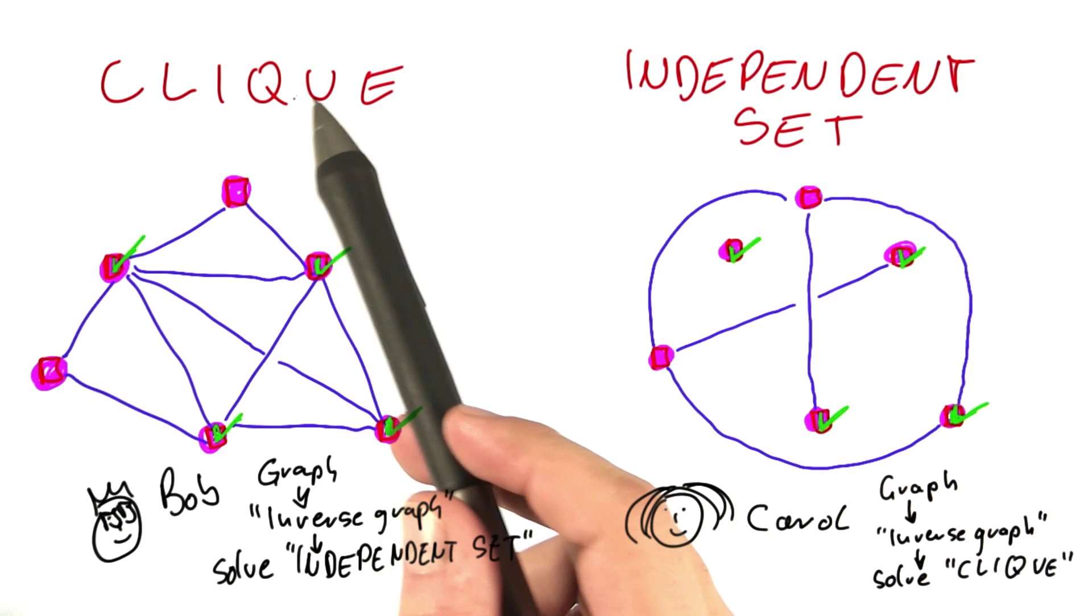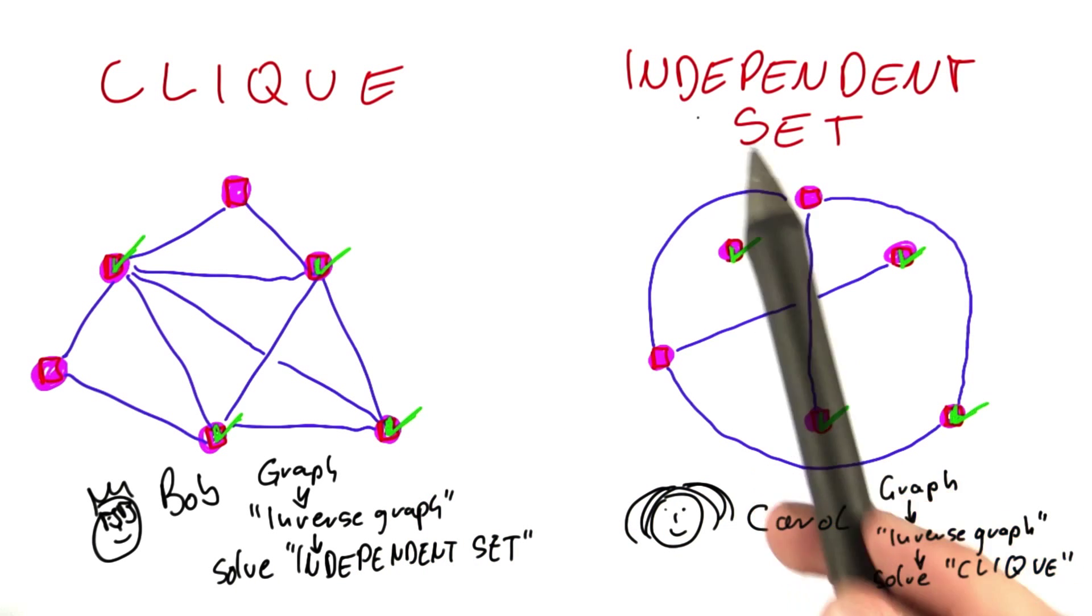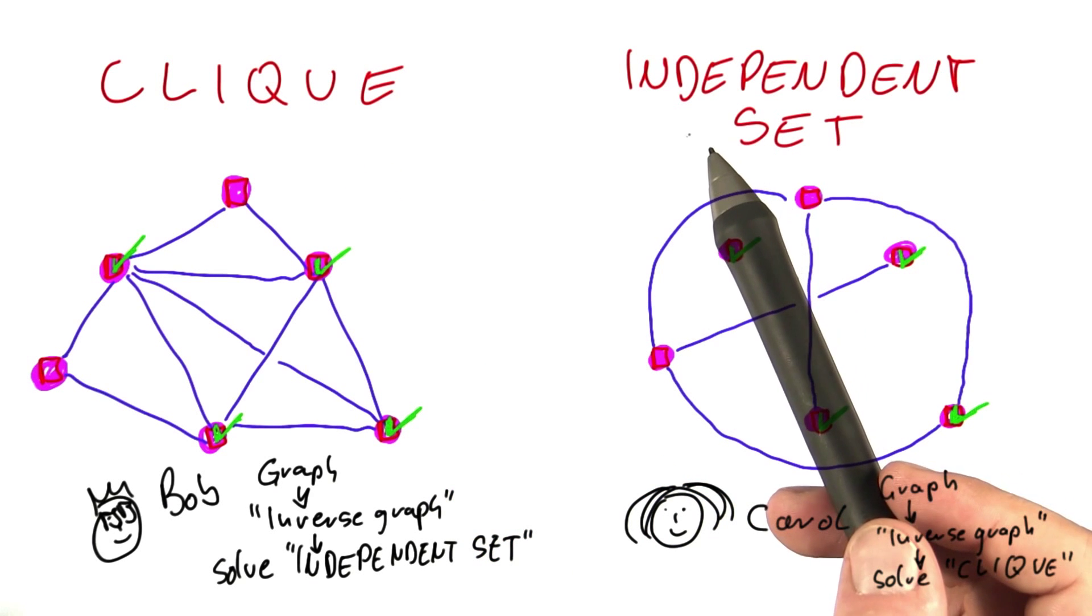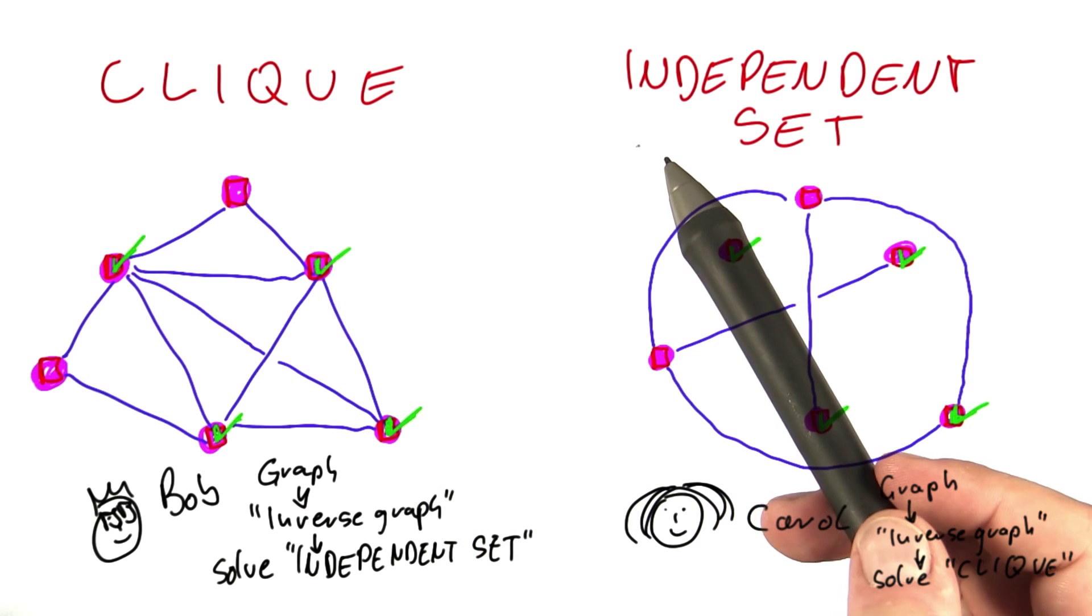Which means that either both clique and independent set are tractable, or both of these problems are intractable. But it cannot be the case that only one of them is tractable or intractable.